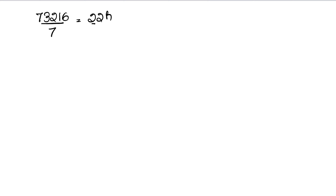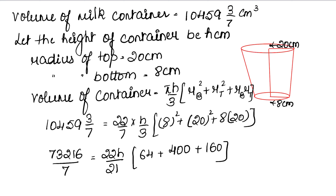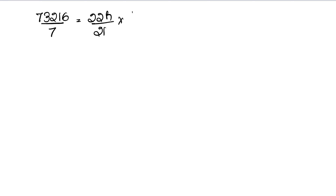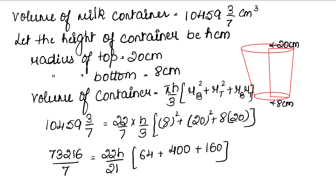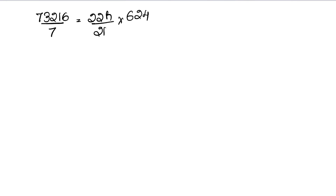73216/7 = 22h/21 × 624। Cross multiply करने पर numerator में 73216 × 21 और denominator में 7 × 22 × 624। Calculation करके 7, 3, 2, 1, 6 upon 7 = 22h × 624 / 21। एक बार check करते हैं — 64 + 400 + 160 = 624, सही है।